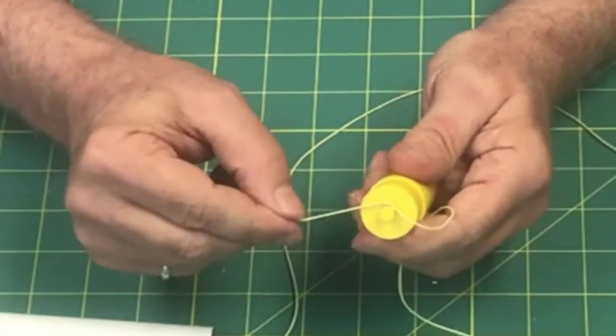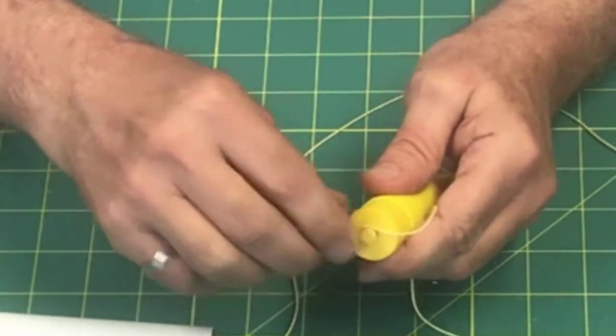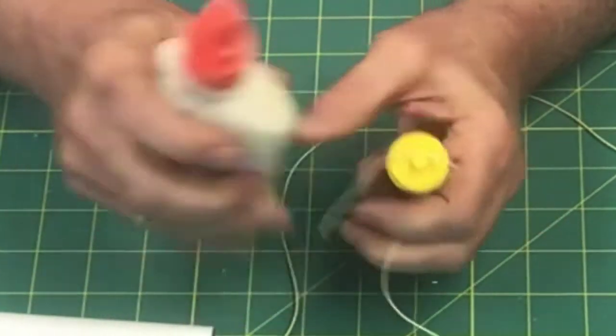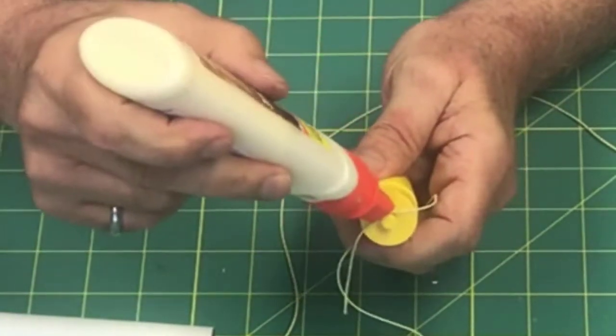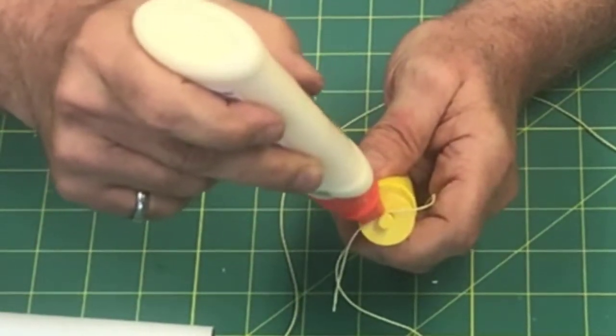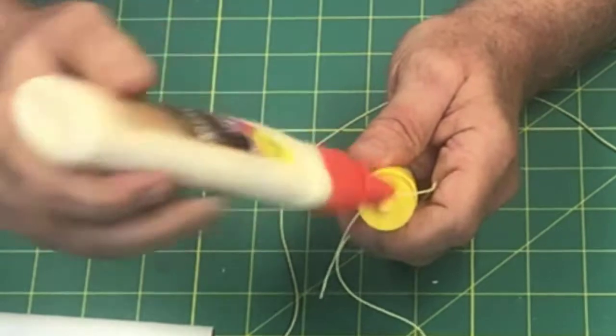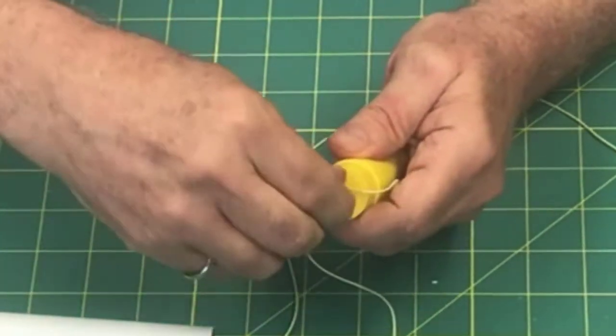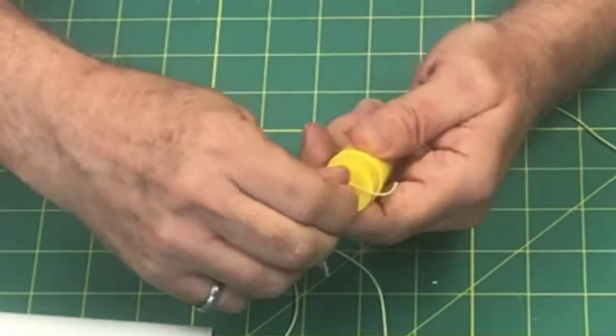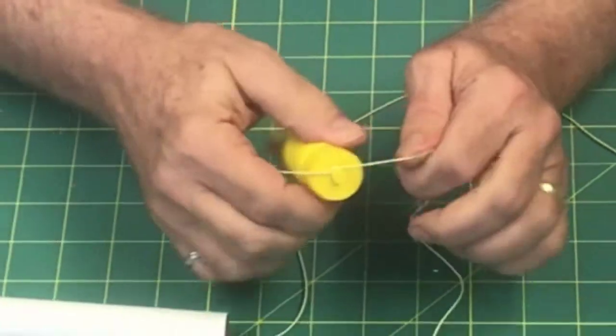So then you want to take your wood glue here, put a little drop of your wood glue on there, and then just rub it into the knot so the knot's not going to come undone.